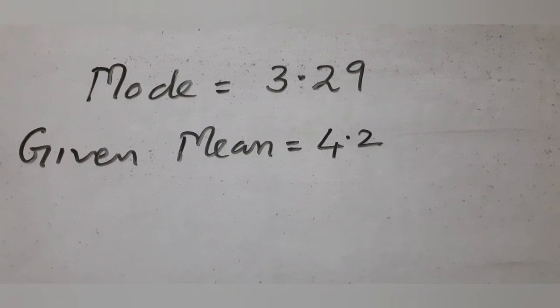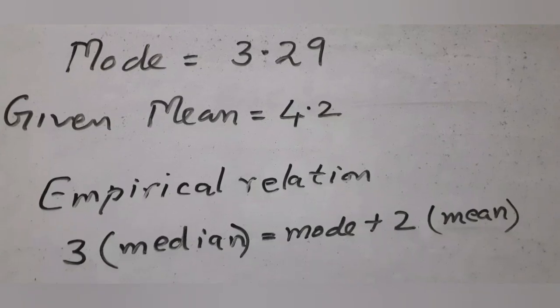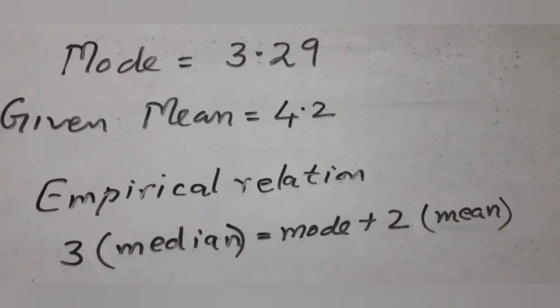It is given that the mean is 4.2. Apply these values into the empirical relation: 3 times median equals mode plus 2 times mean.